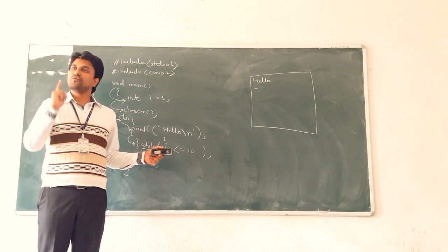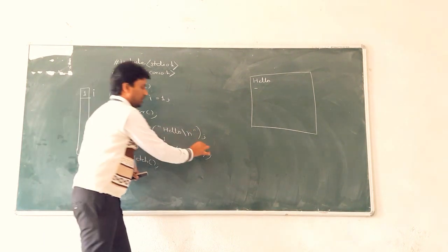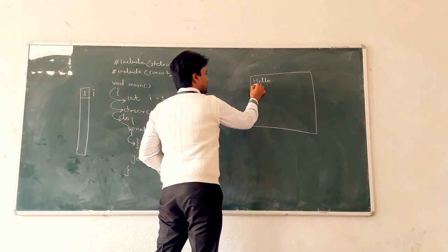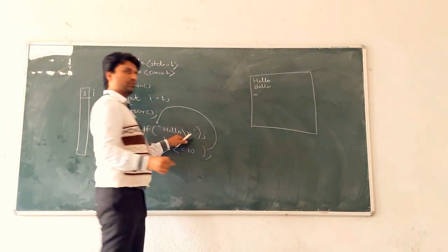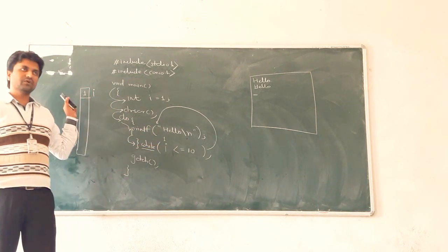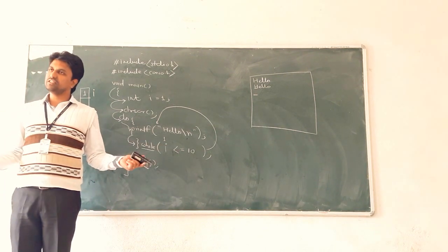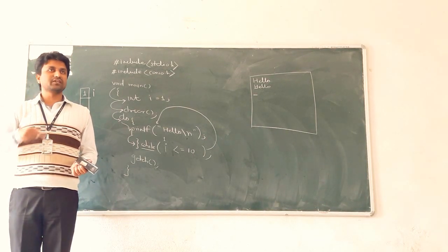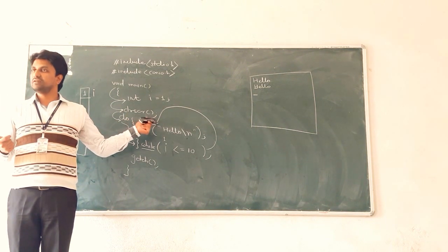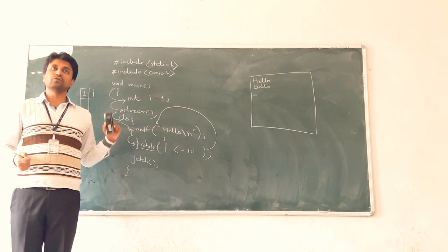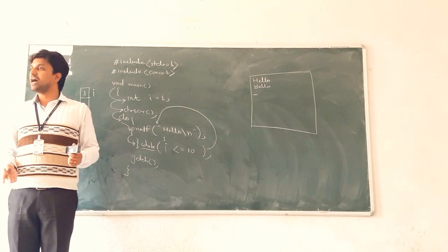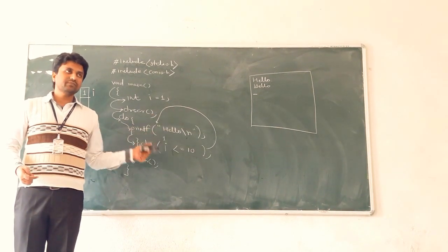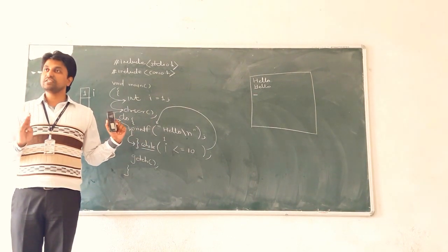Again hello is printed and cursor goes to the next line due to the newline character. Again, while — i is equal to 1 still, so 1 less than or equal to 10, condition true, again entry to do-while loop — likewise the loop keeps executing continuously. There is no condition to stop execution because we actually need to increment the value of i. Without incrementing i, the loop executes infinitely — not just 10 times.